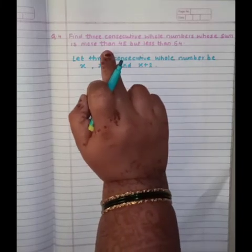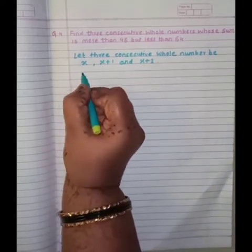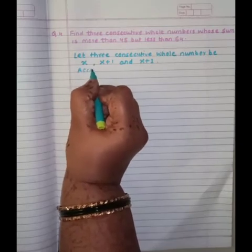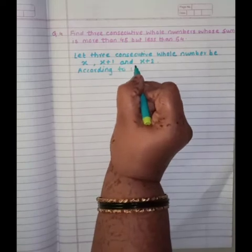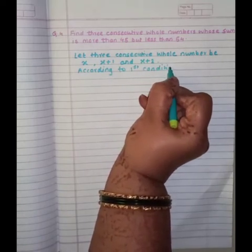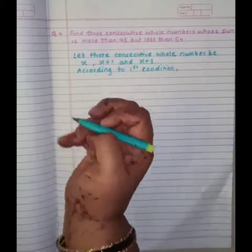The first condition is what? More than 45. So, according to first condition, sum of 3 consecutive numbers.